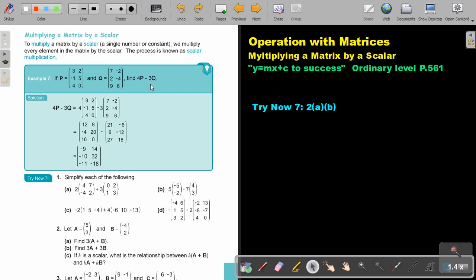If you look at this example, they want you to work out 4P minus 3Q. First rewrite it. In the place of P, put the matrix. And in the place of Q, put the matrix. Now you start multiplying.